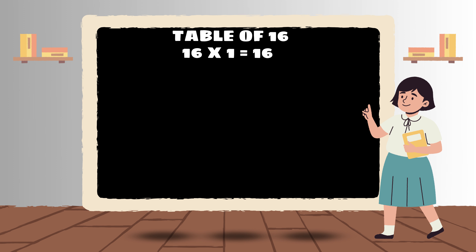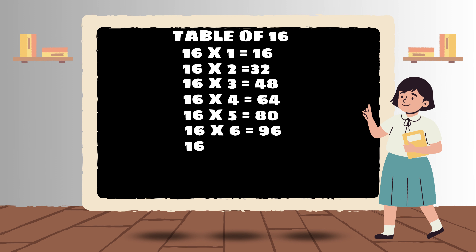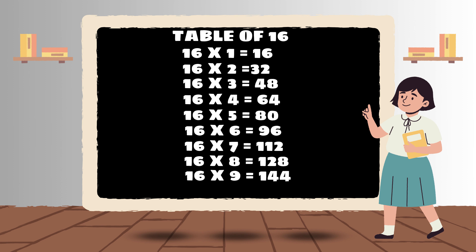16-1's are 16, 16-2's are 32, 16-3's are 48, 16-4's are 64, 16-5's are 80, 16-6's are 96, 16-7's are 112, 16-8's are 128, 16-9's are 144, 16-10's are 160.